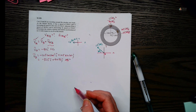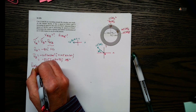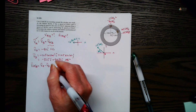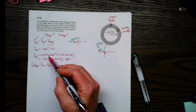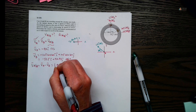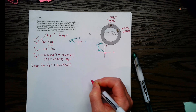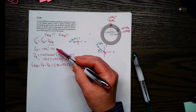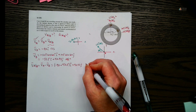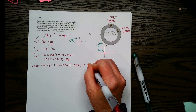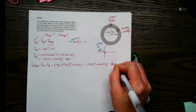Now we have both vectors, so we can find the relative term. We do V_A minus V_B, subtracting the like terms. For I: negative 90 minus negative 52.5 gives negative 37.5i. For J: we don't have a J term in V_A, so we just carry the 90.93j. That gives us negative 37.5i plus 90.93j feet per second.